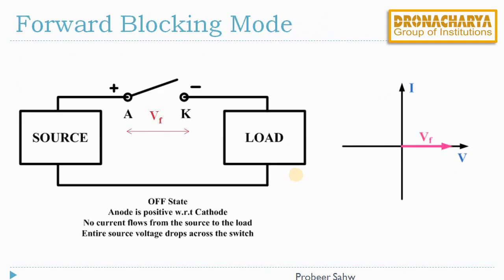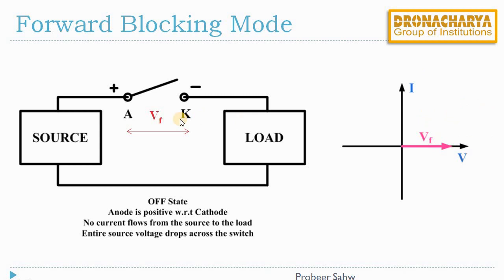The first mode is forward blocking mode. As the name suggests, forward means the anode will be at higher potential than the cathode. This will happen when the source is at higher potential than the load. Since the name suggests blocking, this means the switch will be open. Hence, no current will flow from the source to the load and the entire source voltage will drop across this switch. The VI characteristics of this forward blocking mode is shown in the right figure — there is no current, only a forward voltage that is blocked by this switch, because the anode is at higher potential.